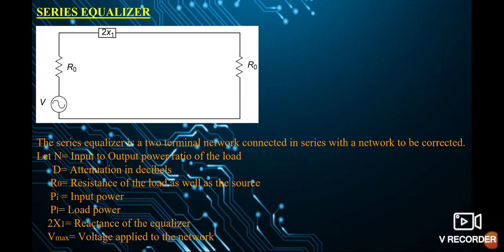The diagram for a series equalizer is shown. The series equalizer is a two-terminal network connected in series with the network to be corrected. From the diagram: N is the input-to-output power ratio of the load, D is the attenuation in decibels, and R0 is the resistance of the load as well as the source.